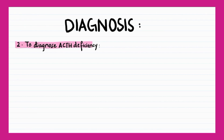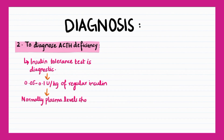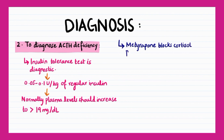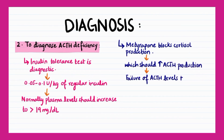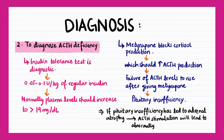The insulin tolerance test is diagnostic for ACTH deficiency and involves giving 0.05 to 0.1 units per kilogram of regular insulin and measuring serum cortisol. Normally, plasma levels should increase to greater than 19 milligrams per deciliter. Metirapone is a steroid 11-beta monooxygenase inhibitor which tests for decreased ACTH production. Metirapone blocks cortisol production, which should increase ACTH levels. A failure of ACTH levels to rise after giving metirapone indicates pituitary insufficiency. If pituitary insufficiency has led to adrenal atrophy, then ACTH stimulation may give abnormally low cortisol output.